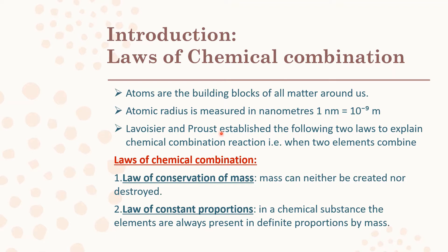Scientists Lavoisier and Proust established two laws to discuss the masses of elements when they are chemically combined. In a chemical reaction, two elements combine to form a new product. The mass of the reactants remains the same when compared to the mass of the products — this is called the Law of Conservation of Mass, and it comes under the Laws of Chemical Combination.